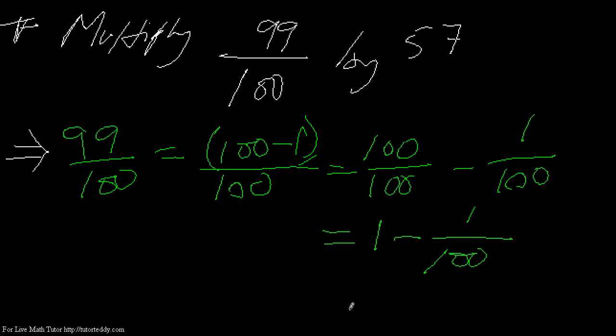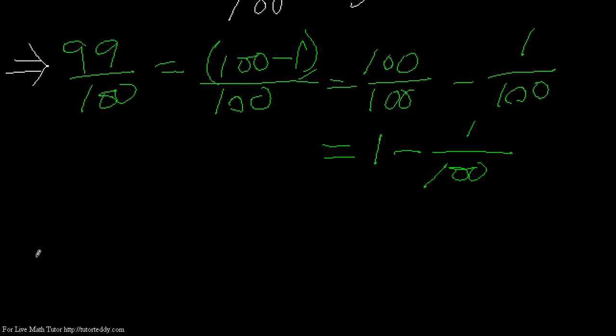So I have to multiply this (1 - 1/100) with 57. Therefore, 99/100 times 57 equals (1 - 1/100) times 57.